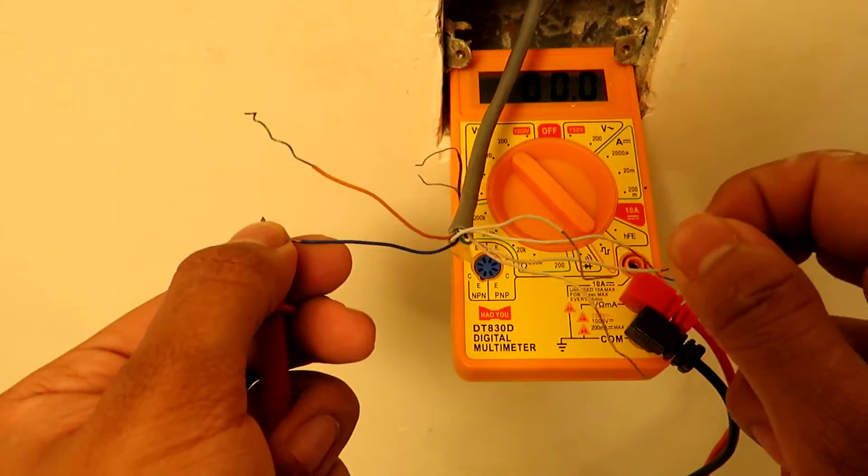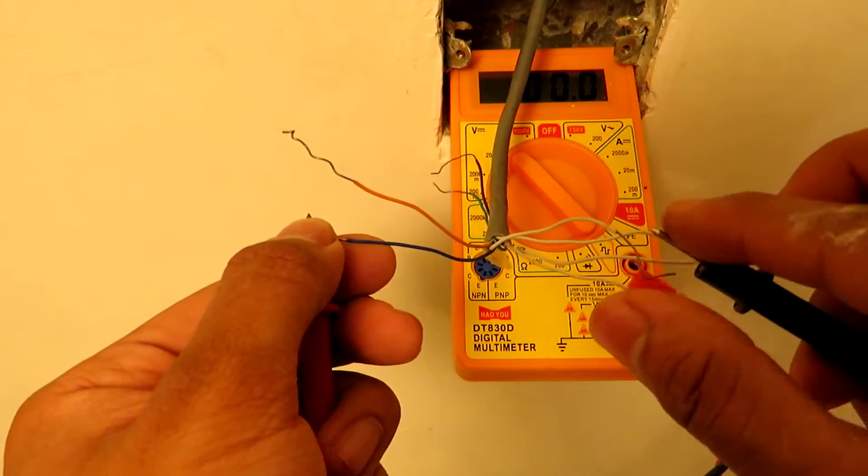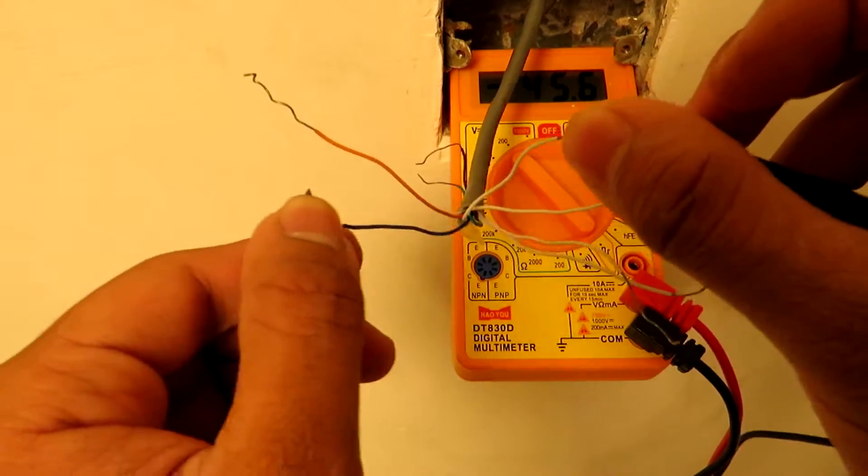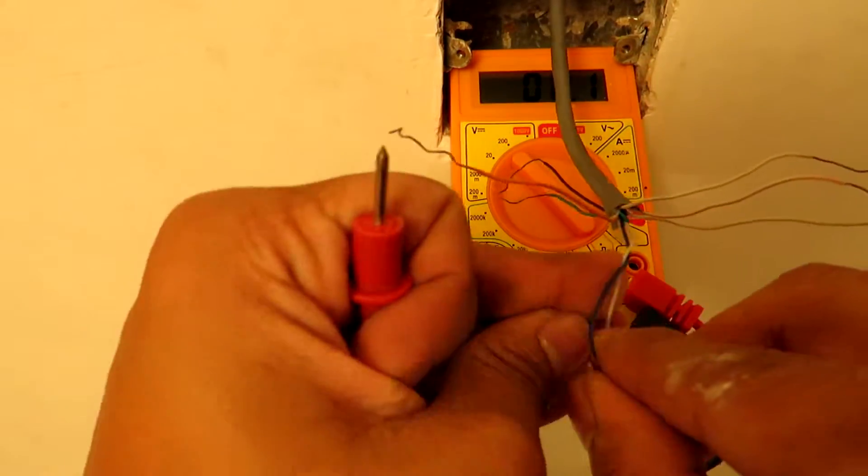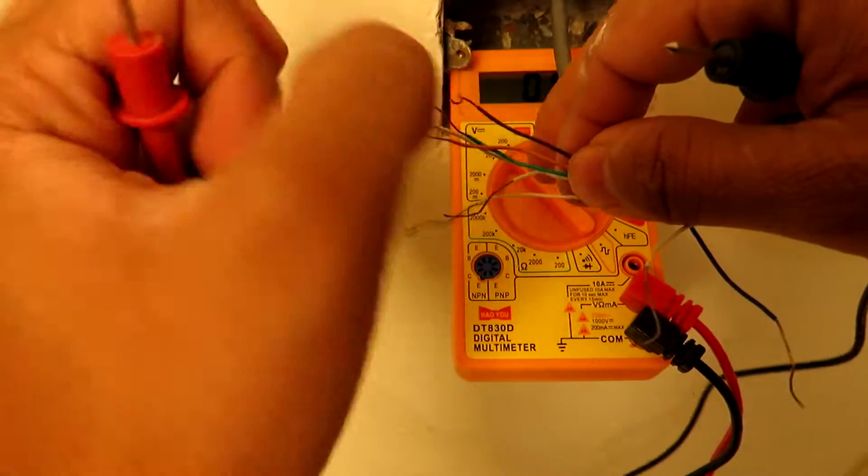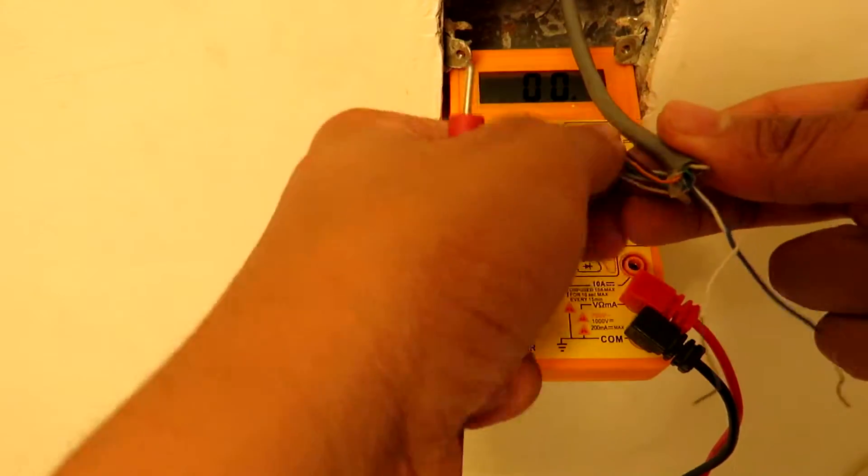So here you can see that we have successfully found our pair. Generally by standards, the connection should be given to the blue pair. Now that we have found our active pair, we are going to take all of the remaining wires, cut off the skinned part of the wires, and coil it up on the same cable.